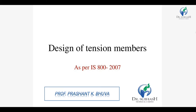The strength of a tension member is affected by several criteria: length of connection, size and spacing of fasteners, net area of cross section, type of fabrication, connection eccentricity, and shear lag effect. We will see in detail in this video what is the effect of shear lag.